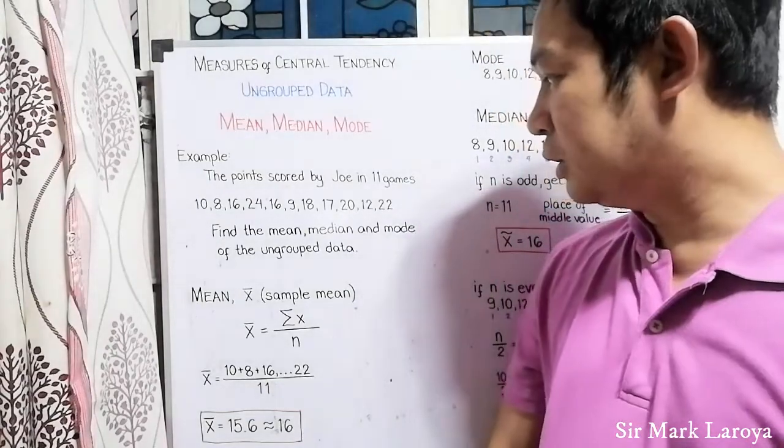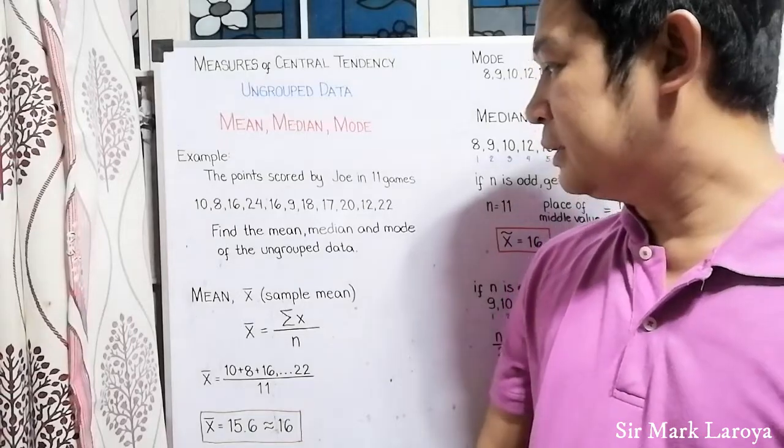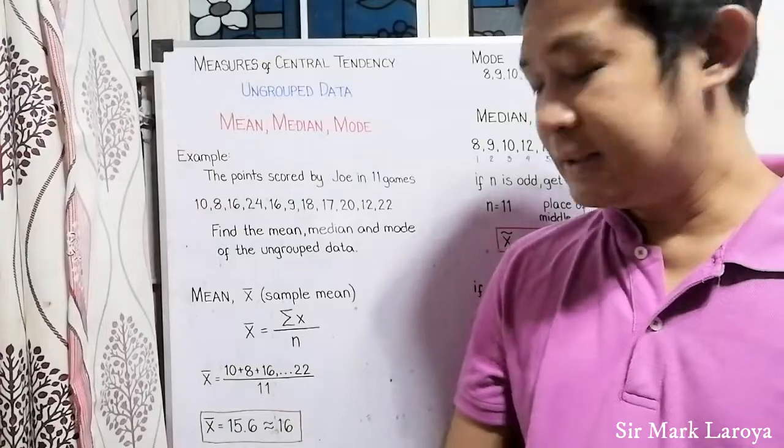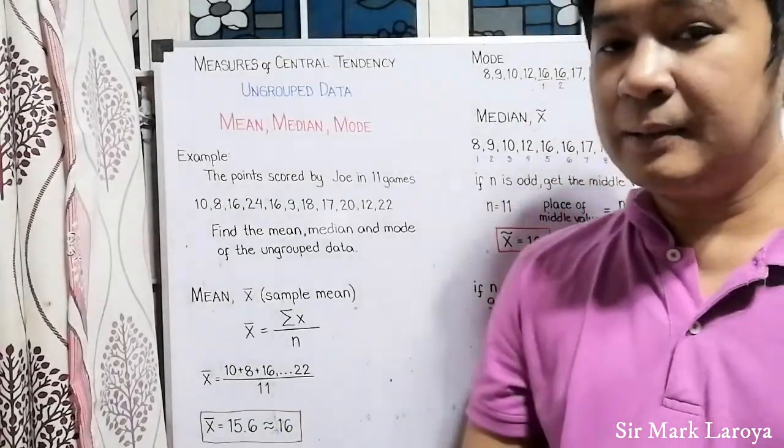So, we can say that Joe, the average points that Joe scored or scores in a game is equal to 16 points.